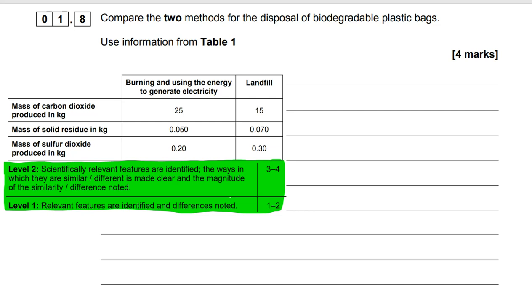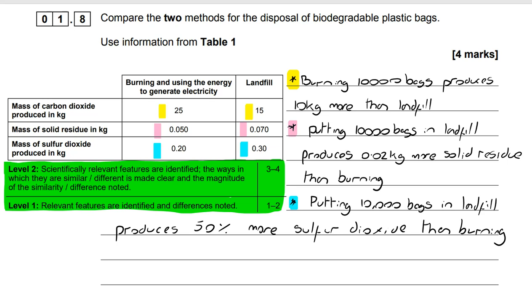To get a level 1, you need some relevant features and some differences noted. So let's take a look at what we can do with the information. Well, if I look at column 1, I can see that burning 10,000 bags would produce 10 kilograms more carbon dioxide than landfill. So I'm getting an idea of scale there. Putting 10,000 bags in landfill does produce 0.02 kilograms more solid residue than burning. And putting them in landfill produces 50% more sulfur dioxide than burning. So we've got some good comparisons there, and you can see I've taken that data direct from the table.